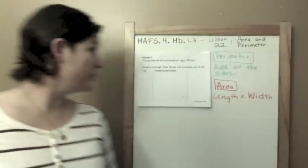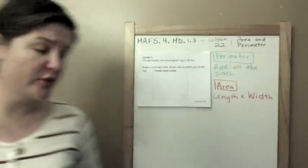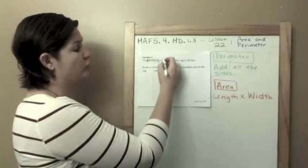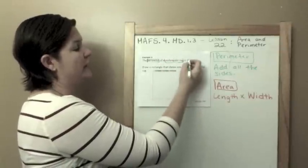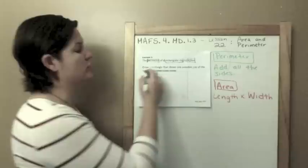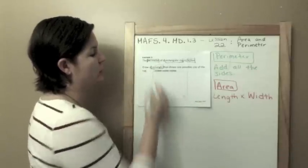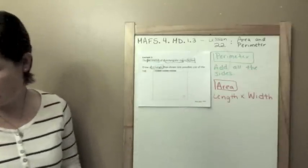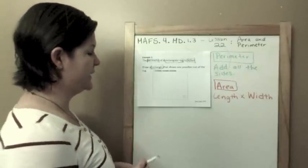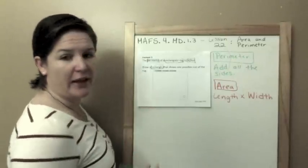Example three. The perimeter of a rectangular rug is 18 feet. Draw a rectangle that shows one possible size of the rug.